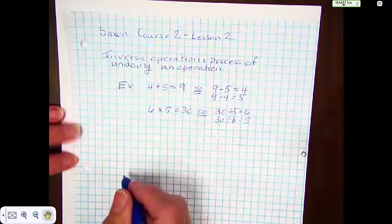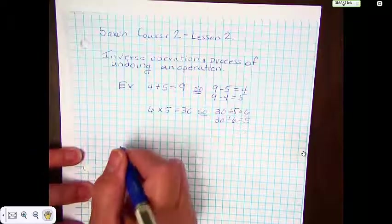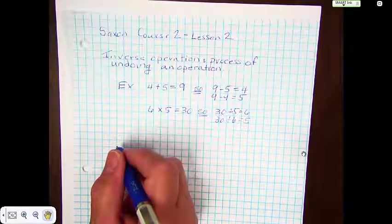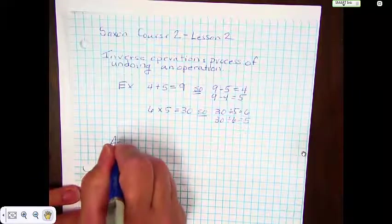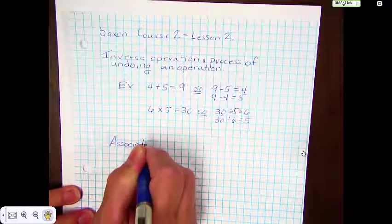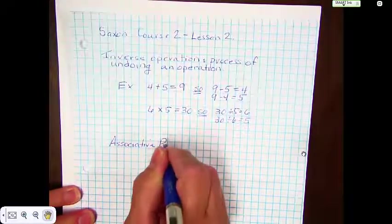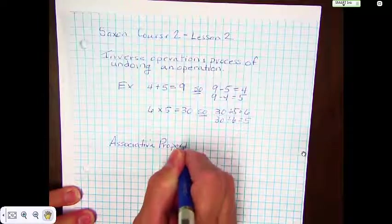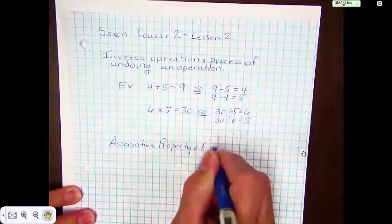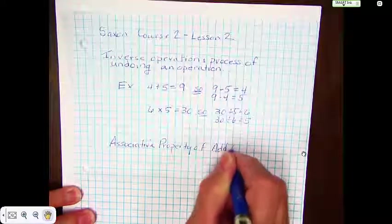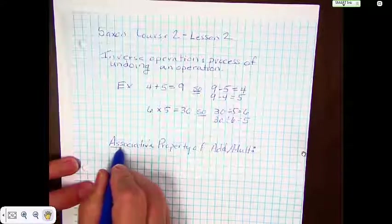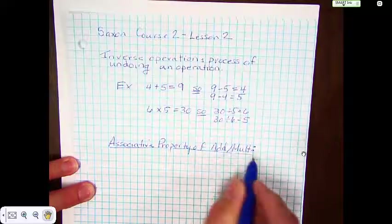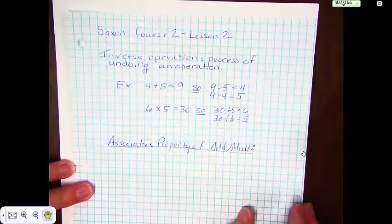So that's just covering the whole idea of inverse operations. Now we have about 4 or 5 properties that we need to talk about quickly, and you're probably already aware of them. The first one is the associative property of addition and multiplication. What the associative property tells us is that we can regroup numbers.